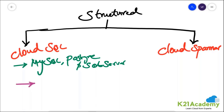If you're using Cloud SQL as a database, the maximum capacity of Cloud SQL is 30 terabytes in size. The maximum Cloud SQL storage capacity is 30 TB — not beyond that.